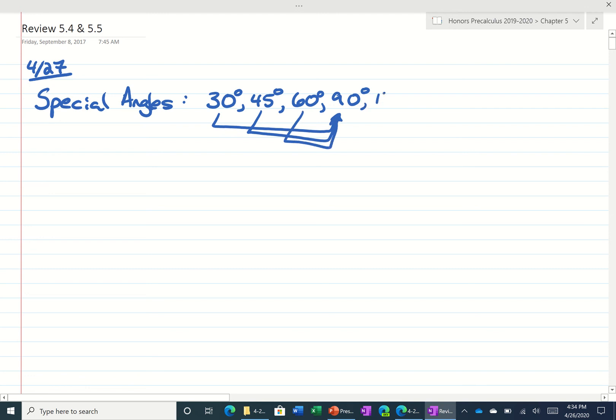So 90 plus 30 is 120, 90 plus 45 is 135, 60 plus 90 is 150, 90 plus 90 is 180, and then we could even keep going by adding all these angles to 180.